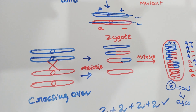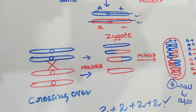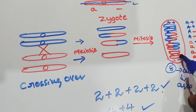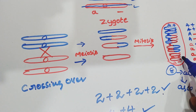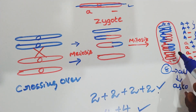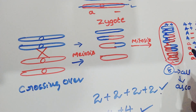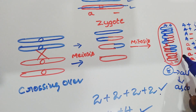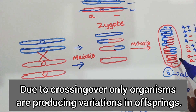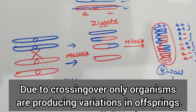The genetical proof for crossing over is provided during the tetrad stage of red bread mould. Due to these recombinants, we can provide the genetical proof for crossing over, which occurs at the pachytene stage of meiosis I. Due to crossing over, organisms have genetic variations. Thank you for watching.